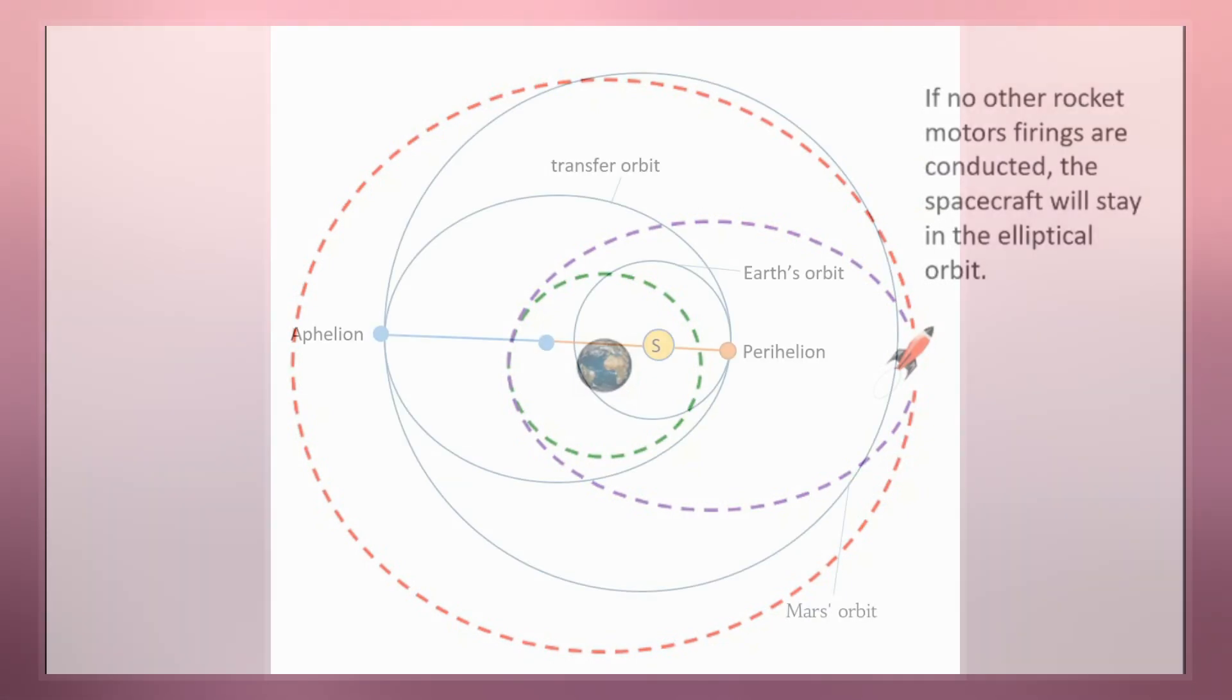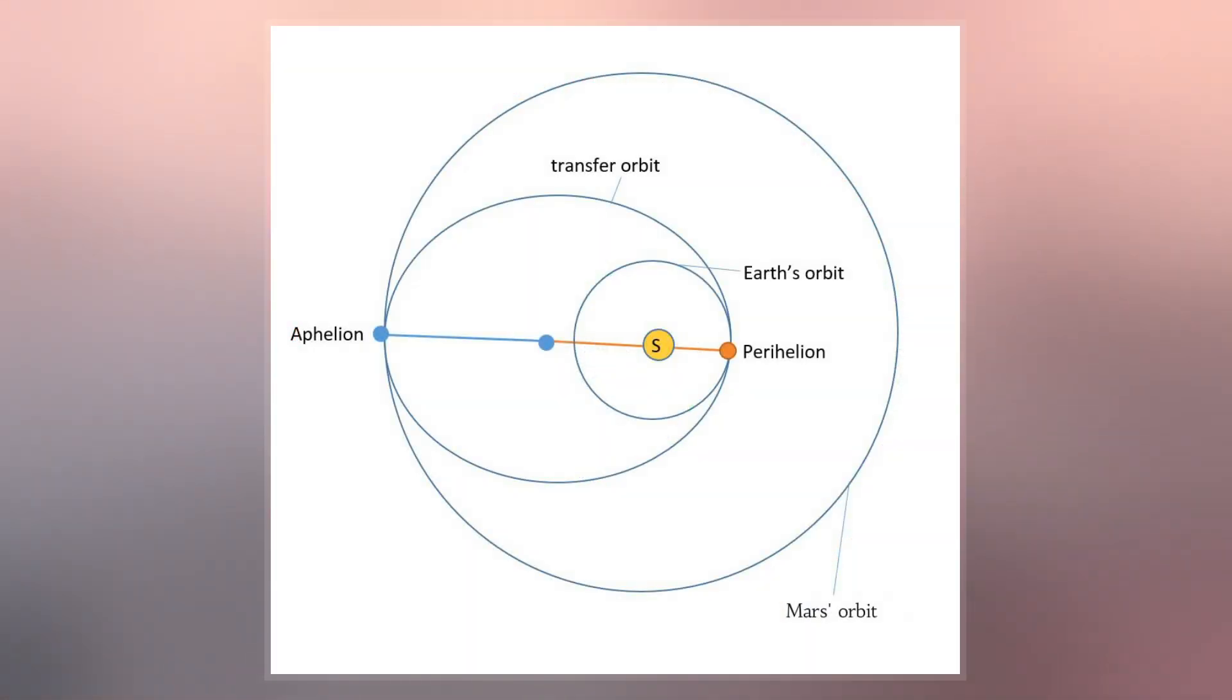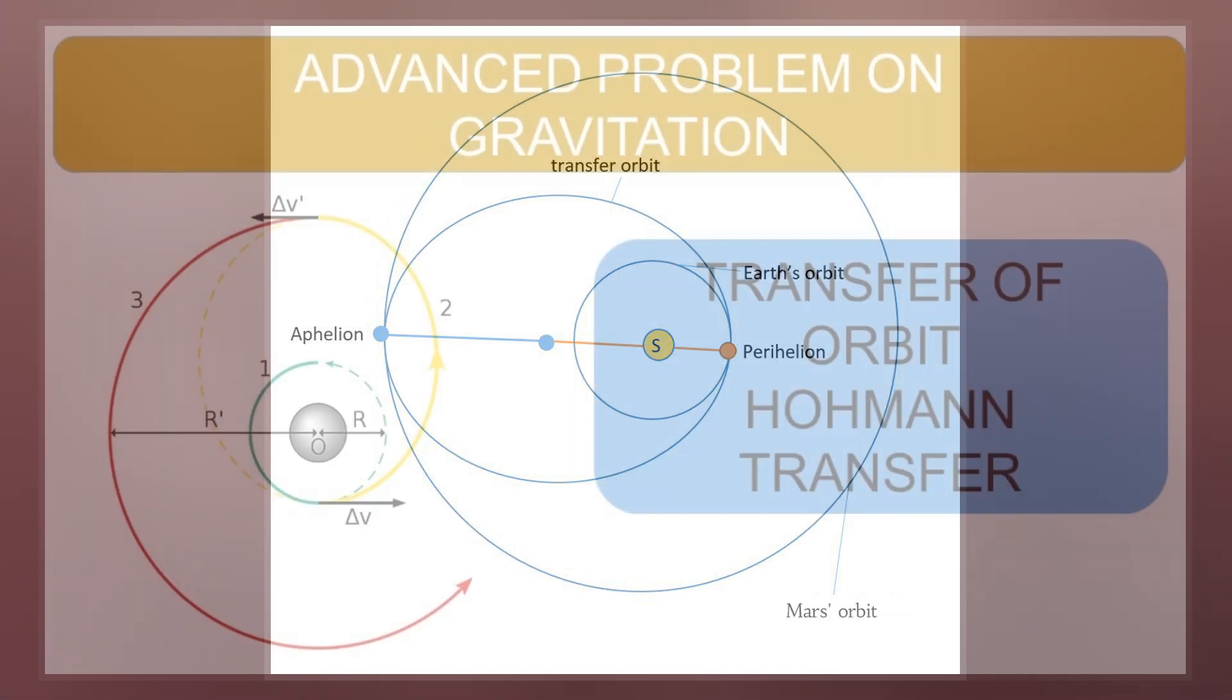The Hohmann transfer often uses the lowest possible amount of propellant when traveling between these orbits, but bi-elliptic transfers can use less in some cases.